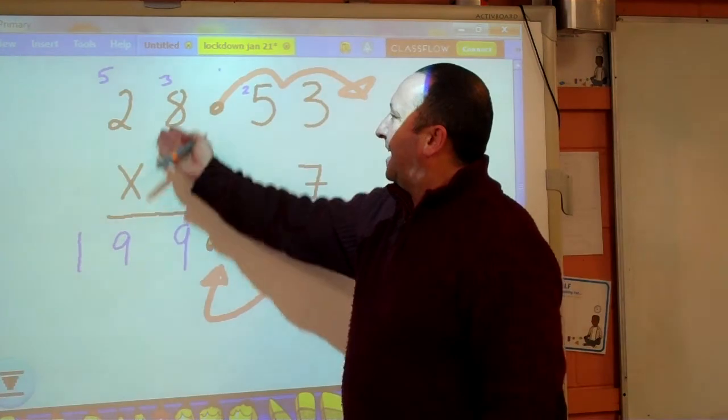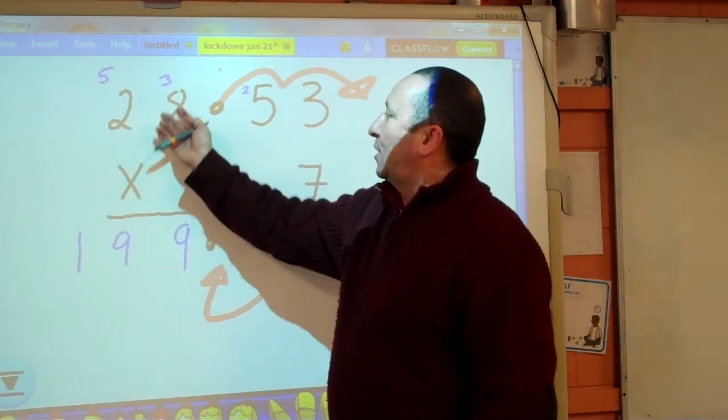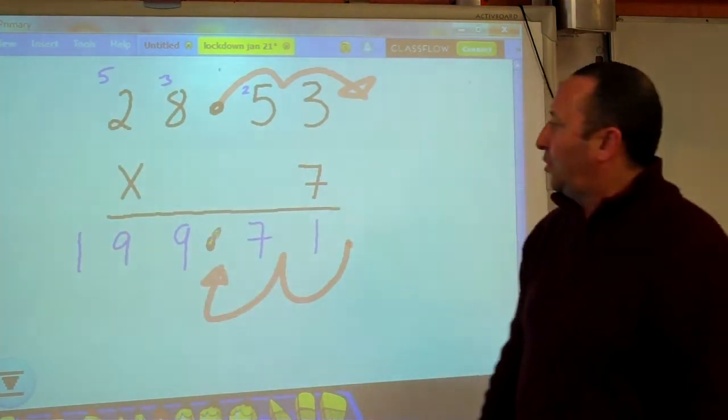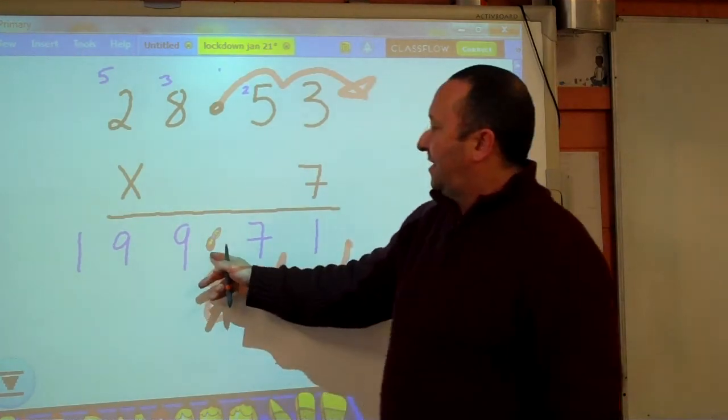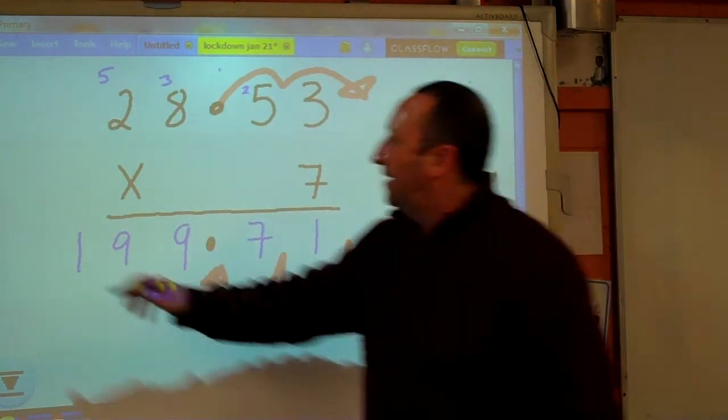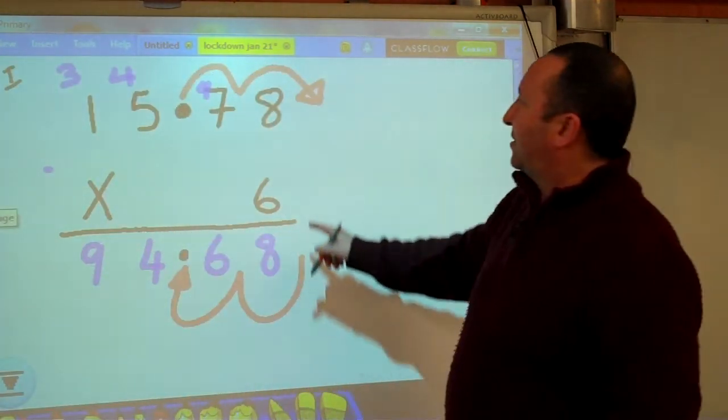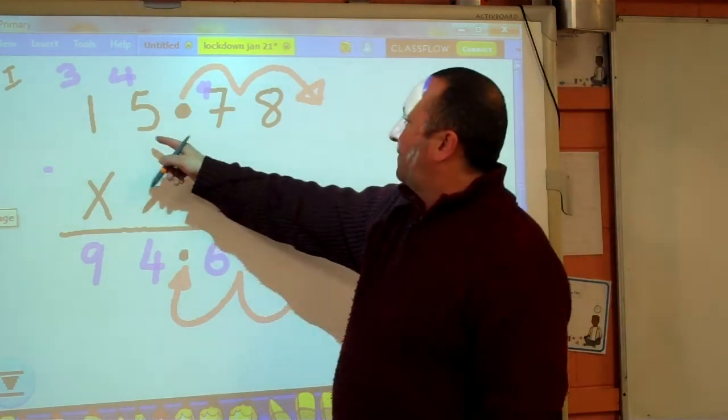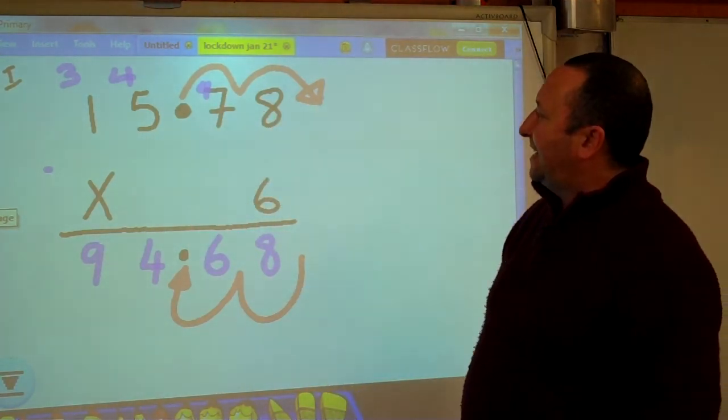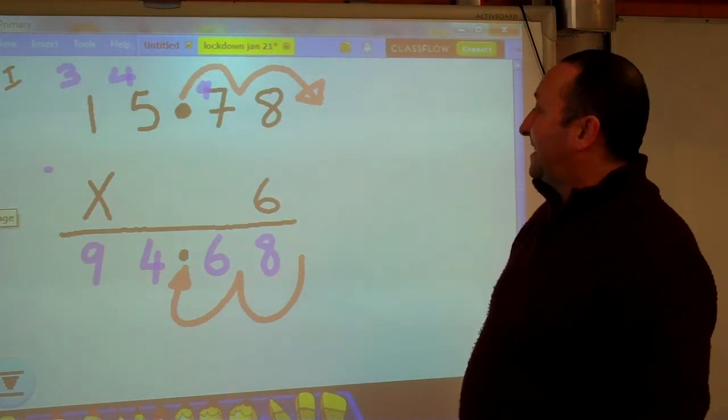If I were to estimate that, I would say that's closer to 30, and 7 times 30 is 210. It's another reason my decimal point should be in there. If I was back at this sum, I would say 15.78 is nearly 16, so 16 times 6 is 96.